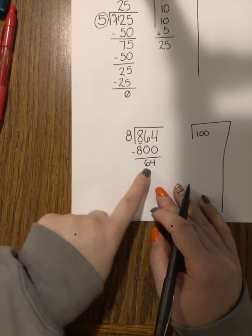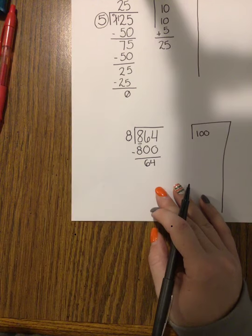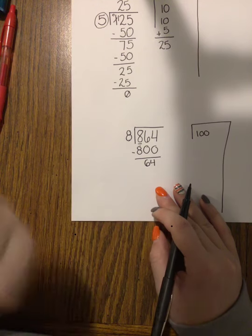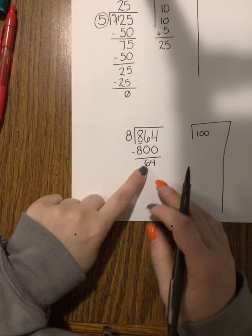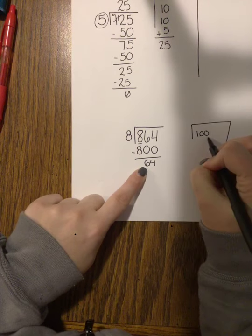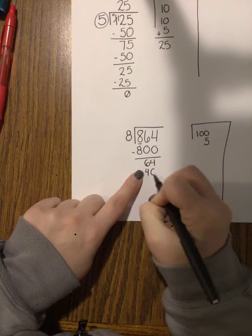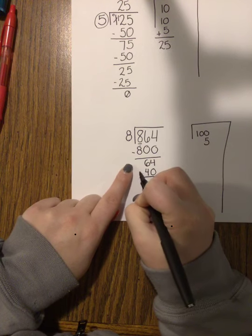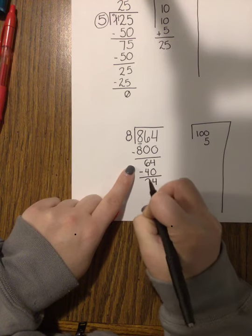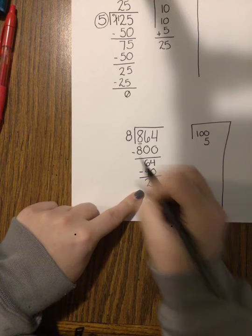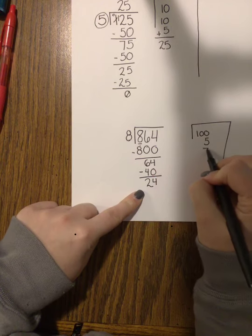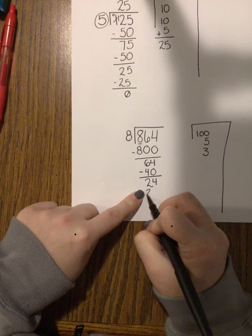Now you can go off of your multiplication. Some of you will automatically know that there are 8 groups of 8 in 64. If not, that's okay. I know I can't take out 10 groups because 10 times 8 would be 80, but I could take out 5 groups. 5 times 8 is 40, which gives me 24 left. Then I know that 8 times 3 is 24, so I can take out 3 groups to get to 0.